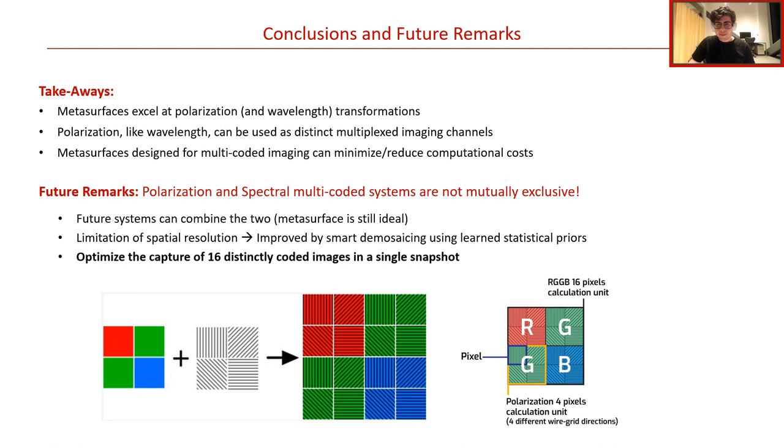Regarding the future, it is worth emphasizing that the ideas of polarization and spectral multi-coded imaging are not mutually exclusive. Commercially available cameras combine the two and pair a mosaic of linear polarizers with RGB Bayer filters as shown below. This presents an interesting future avenue of research, as metasurfaces would still be an ideal optic to design. Notably, the main limitation of this technique is a limitation of spatial resolution. However, it is well known that this can be fixed by smarter algorithms and demosaicing networks that leverage statistical priors. By combining polarization and spectral coding using such filter arrays, it is then possible to simultaneously capture 16 distinct images in a single snapshot. What researchers choose to do with all those images is left to be seen.